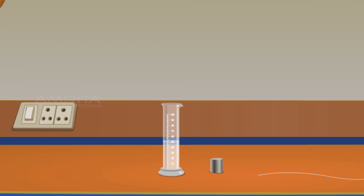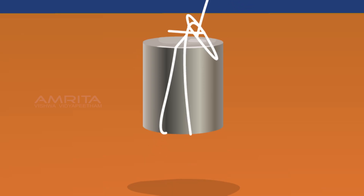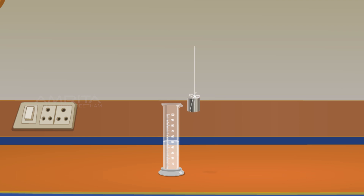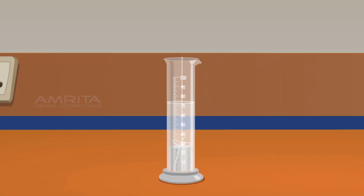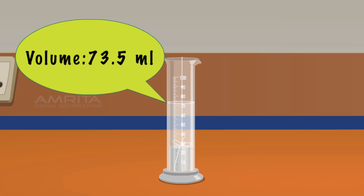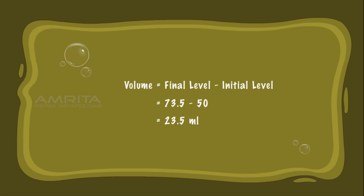Iron. Use a piece of iron, a piece of twine, and 50 ml water in a 100 ml beaker. Tie the piece of iron using the twine. Immerse the piece of iron into the beaker holding the free end of the twine. The water level goes up to 73.5 ml. The volume of water displaced is 23.5 ml.